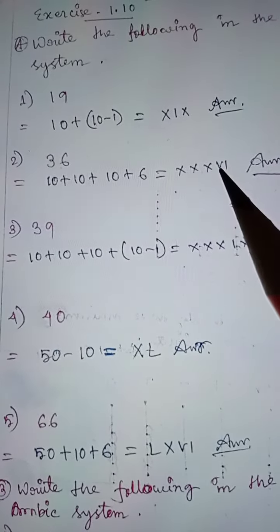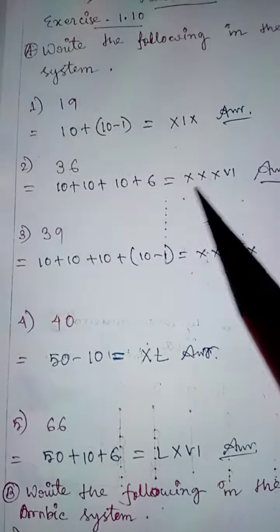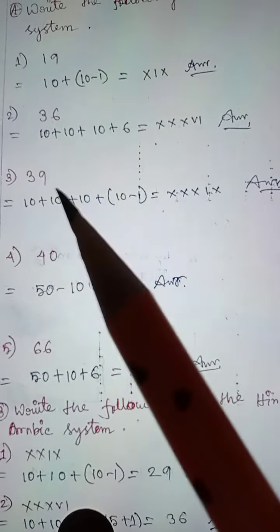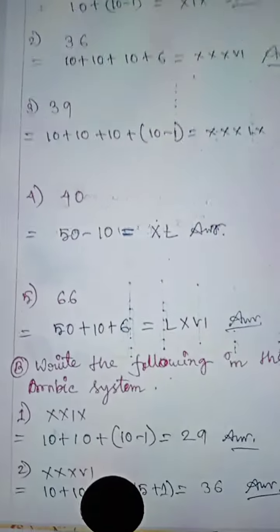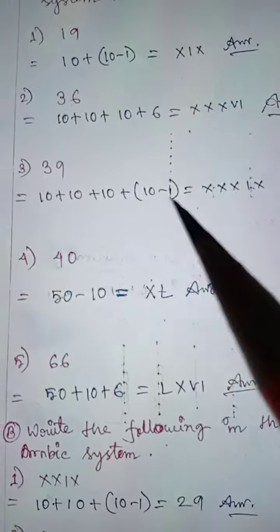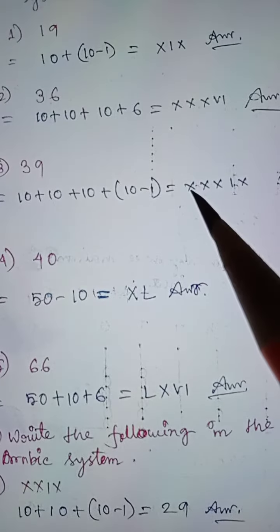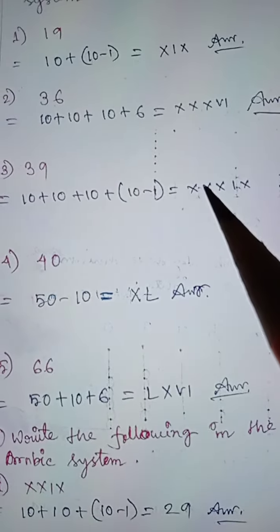So we write X, X, X, and 6 is 5 plus 1, written as VI. This gives us XXXVI. Problem 3: 39. This is 3 times 10, so 10 plus 10 plus 10 equals 30, then plus 10 minus 1, which is 9. So we have 30 and 9, written as XXXIX.